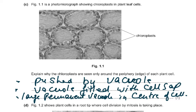Part C: a photomicrograph shows chloroplasts in plant leaf cells, all visible around the periphery — the edge — of each cell. The question asks why chloroplasts are only seen around the periphery and not in the centre. The answer is one mark: they are pushed by the vacuole. You can say the large permanent vacuole filled with cell sap occupies the centre of the cell, pushing the chloroplasts to the periphery — just like chairs pushed to the side of a room by a large central table.